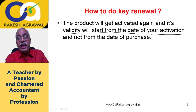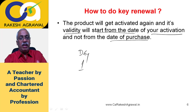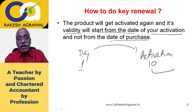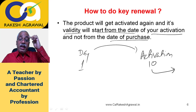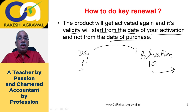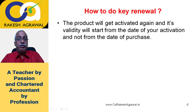The validity will start from the date of your activation, not from the date of purchase. So don't worry if you purchased the key on day one but activated it on day ten — the one-month period will count from day ten. The moment you activate, the new validity starts. Key renewal is counted from the date of activation, not purchase. Those one or two days spent waiting after purchasing are not lost.